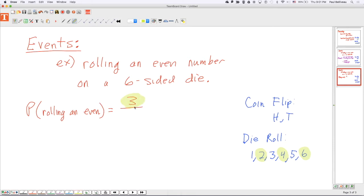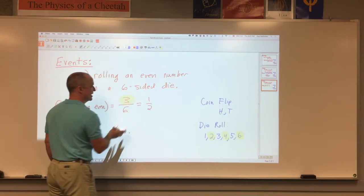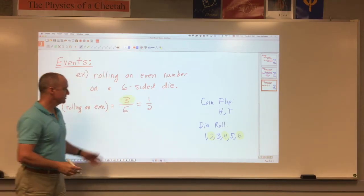There are three things in my event. Three of the elements of my event will describe rolling an even number. There are six things in my sample space. So, the probability is one-half, what I get from reducing the fraction.